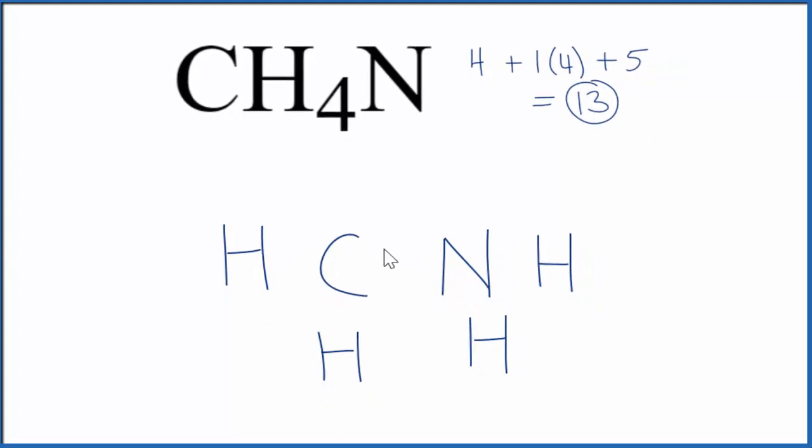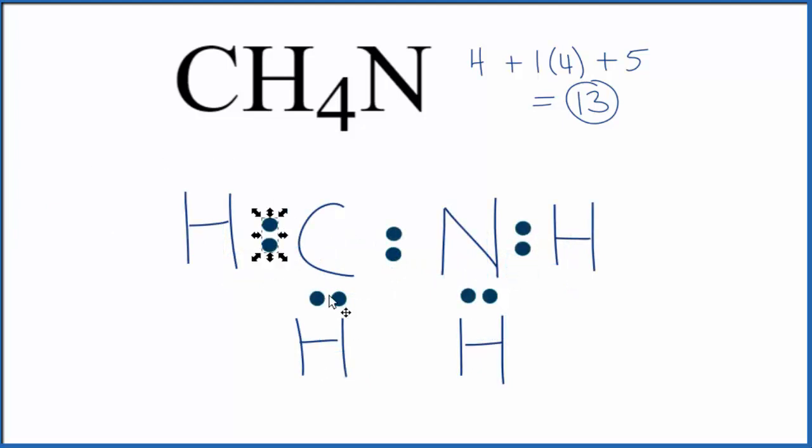So at this point, let's form bonds between the atoms by sharing a pair of electrons. So we'll put a pair of electrons between atoms. So far, we've used 2, 4, 6, 8, 10. We have 13. Let's complete the octet on nitrogen. It's more electronegative, so we'll complete its octet first. So now we've used 12.